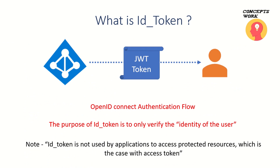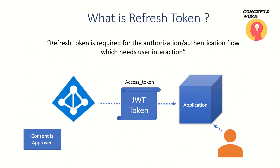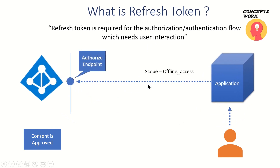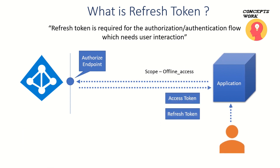Now let's talk about how the refresh token works. In a typical authentication flow where user interaction is required — such as authorization code flow or OpenID Connect — the user navigates to application.com, which redirects the user to Azure AD where they are prompted for consent. Once consent is approved, an access token is given back to the application. To request a refresh token, the first request your application sends to the authorization endpoint must contain a scope value called 'offline_access.' Once this value is present, Azure AD will issue both an access token and a refresh token.